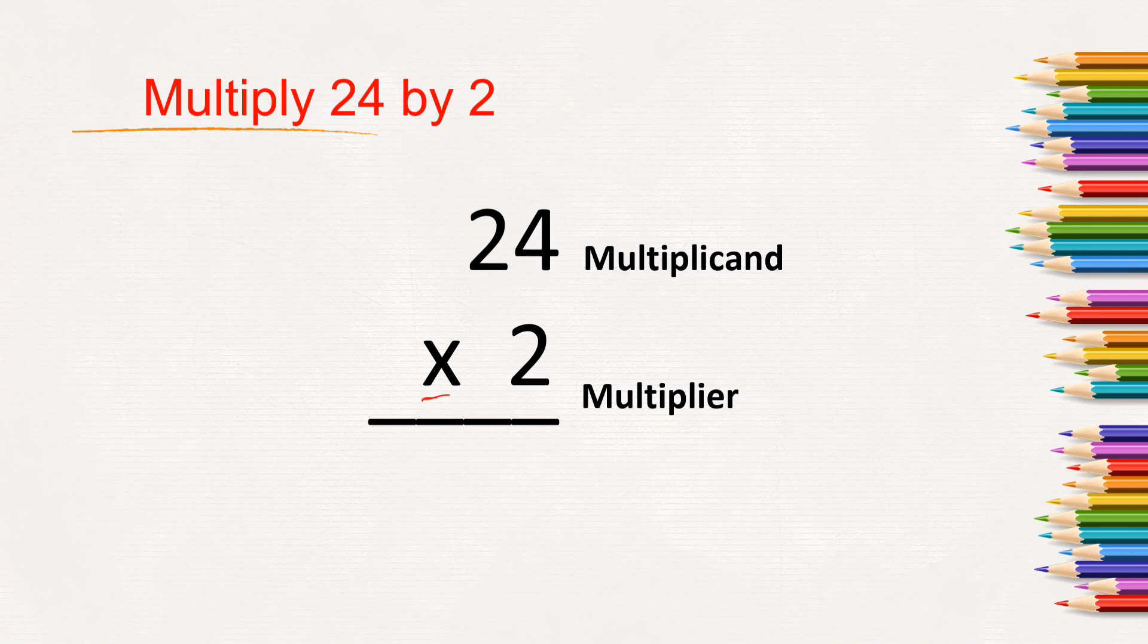Remember we should always start multiplying by 1s place. So here 2 we will multiply with 4. 4 is at 1s place and 2 is at 10s place. First we will multiply with 1s place, then we will multiply with 10s place. 2 times 4 is 8, and 2 times 2 is 4. So here the answer is 48.